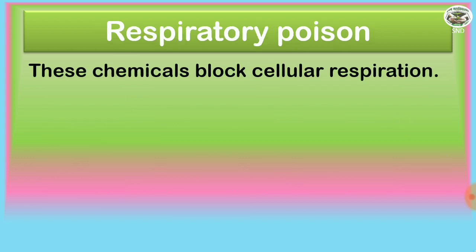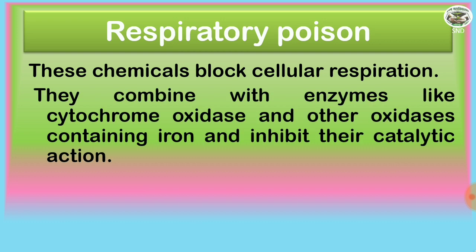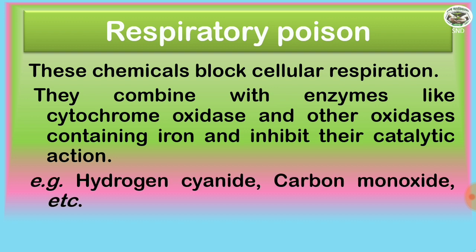Respiratory poison — these chemicals block the cellular respiration. They combine with the enzymes like cytochrome oxidase and other oxidases containing iron and inhibit their catalytic action. Examples are hydrogen cyanide, carbon monoxide, etc.